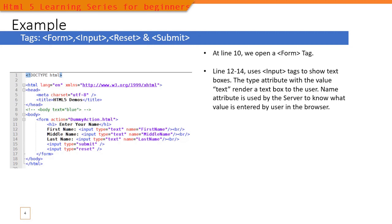We are mixing the HTML document content with these input elements. The label 'First Name' is just plain text with no paragraph tag. After that we specify the input tag with type set to text, then give a name to that text box — the name given is 'first name'. When the user clicks the submit button, the server uses this name attribute to identify which text box the data came from.